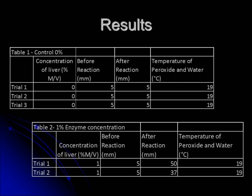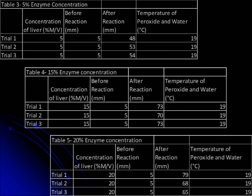Displayed in Table 1, the control did not yield any bubble formation. Table 2 shows the bubble formation for the 1% enzyme concentration to be under 50 mm in height. Table 3 shows the bubble formation for the 5% enzyme concentration to be an average of above 50 mm in height. Table 4 shows the bubble formation for the 15% enzyme concentration to be above 70 mm in height. Table 5 shows the bubble formation for the 20% enzyme concentration to be an average of about 70 mm in height. The temperature of each trial was recorded as a control for temperature, and distilled water was used to control for pH.